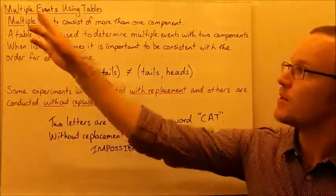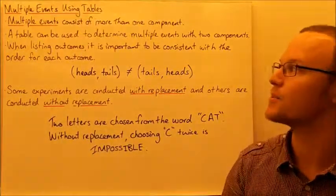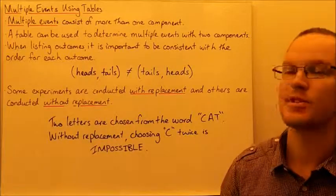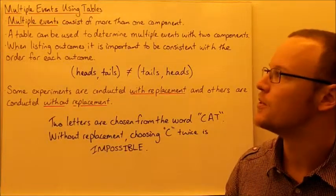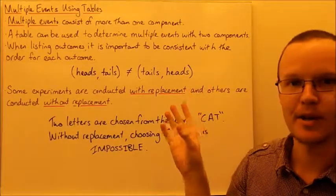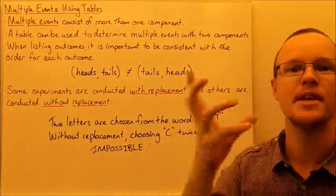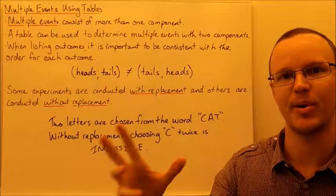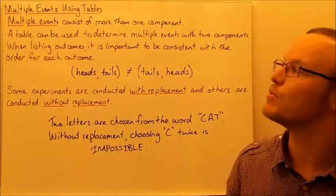Today we're going to look at multiple events using tables. Multiple events consist of more than one component. A table can be used to determine multiple events with two components. If one event happens and then another event, we can look at the probabilities combining those two events together.